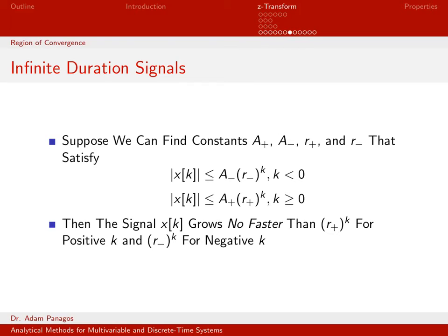Suppose we can find numbers A plus, A minus, R plus, and R minus satisfying two conditions. The first, dealing with negative time, says I can find A minus and R minus such that the magnitude of X of K for negative times is always less than or equal to A minus times R minus to the K — meaning the signal grows no faster than R minus to the K for negative time.